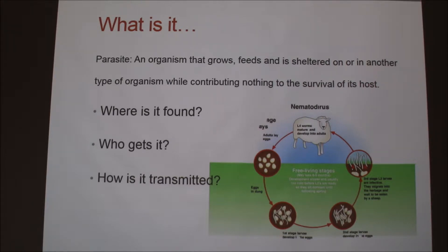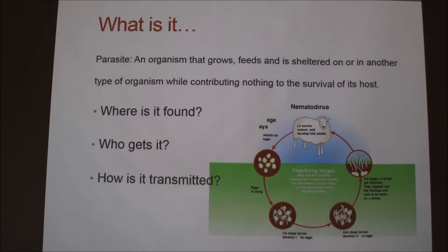Some parasites live better in some animals than others. It's kind of like heartworms with dogs — they get it, but people can't. We can get bitten by a mosquito that has the heartworm, but we don't get it. It could be pH, hormone levels — who knows what it is.